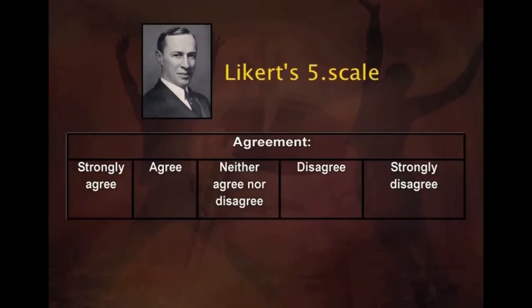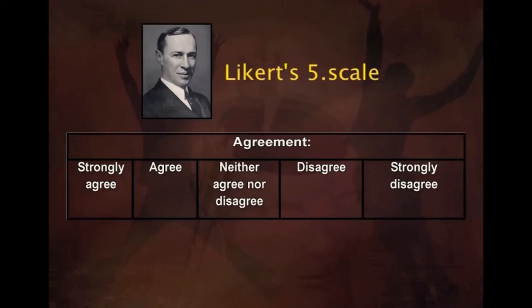For example, if you want to find out an opinion about a particular concept using agreement on a five-point scale — say if you agree with a particular individual being selected as a leader — you can locate in a Likert five-point scale whether you strongly agree, agree, neither agree nor disagree, disagree, or strongly disagree. This is all about agreeing to a particular individual decision.